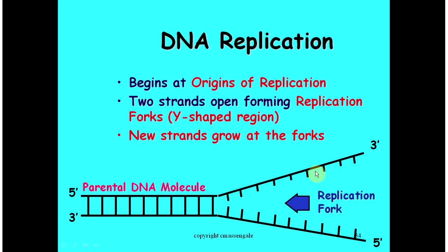Notice that these strands run anti-parallel to each other, meaning they run in opposite directions. Left to right, one strand goes from its 5' towards its 3' end, while the other goes from its 3' to its 5' end. Label the replication fork and the 5' and 3' ends of each parent strand.